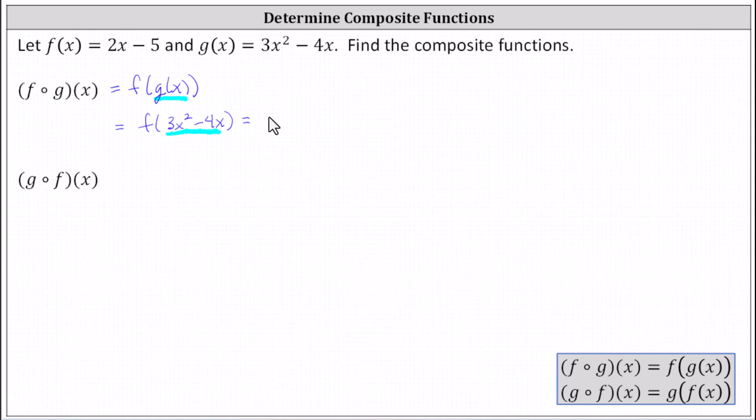This gives us 2 times, not x, but 3x squared minus 4x, minus 5. Let's distribute the 2.